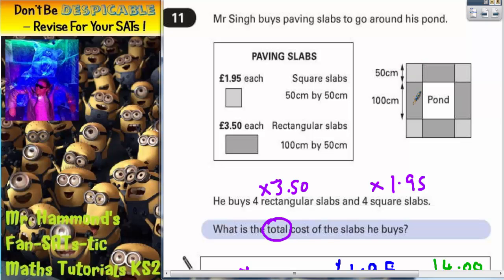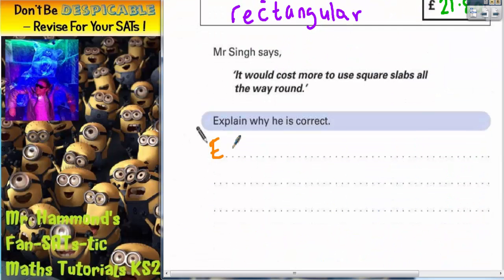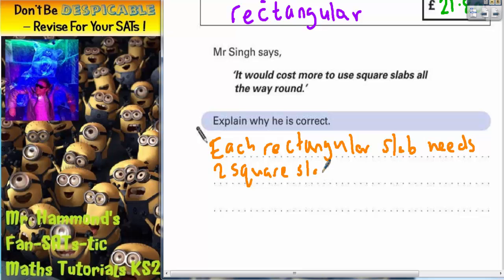So actually, for every rectangular slab, you would need two of the square slabs. So if we can prove that two square slabs costs more than one rectangular slab, we would have done it. So we could do this.